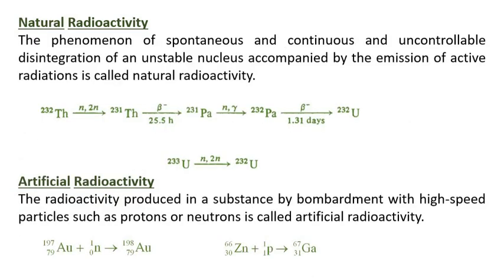Natural Radioactivity: The phenomenon of spontaneous, continuous, and uncontrollable disintegration of an unstable nucleus accompanied by the emission of active radiations is called natural radioactivity. Artificial Radioactivity: The radioactivity produced in a substance by bombardment with high-speed particles such as protons or neutrons is called artificial radioactivity.